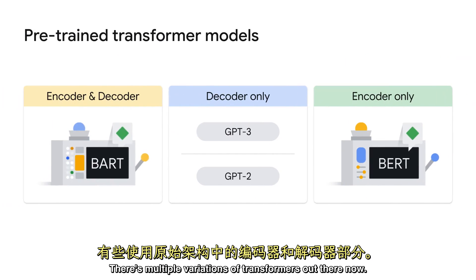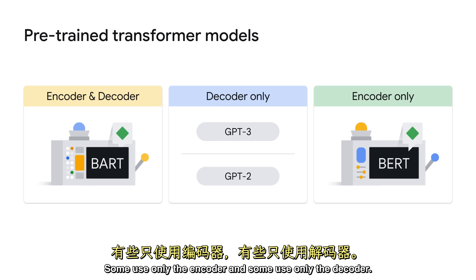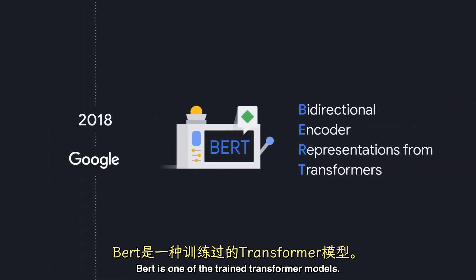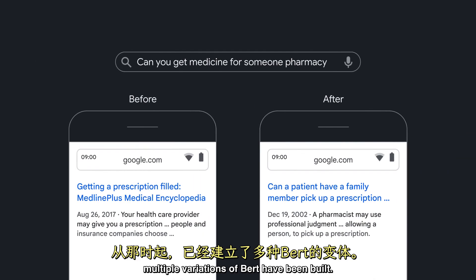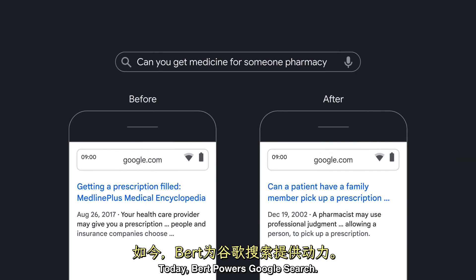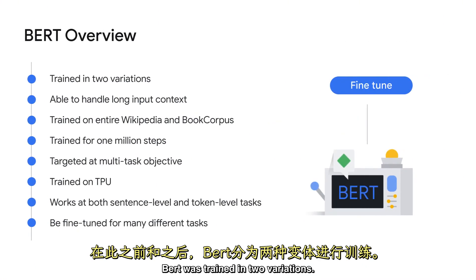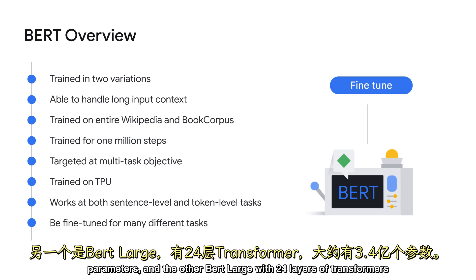There are multiple variations of transformers out there now. Some use both the encoder and the decoder component from the original architecture, some use only the encoder, and some use only the decoder. A popular encoder-only architecture is BERT. BERT is one of the trained transformer models. BERT stands for Bidirectional Encoder Representations from Transformers, and was developed by Google in 2018. Since then, multiple variations of BERT have been built. Today, BERT powers Google Search. One model contains BERT base, which had 12 stacks of transformers with approximately 110 million parameters, and the other, BERT large, with 24 layers of transformers with about 340 million parameters.